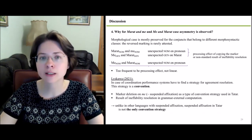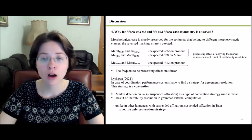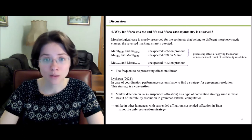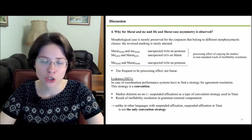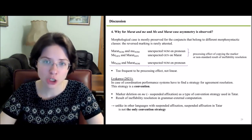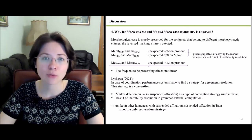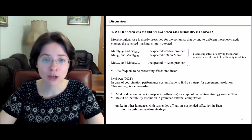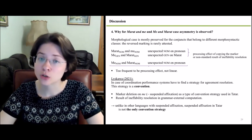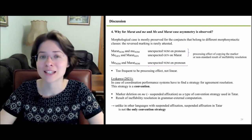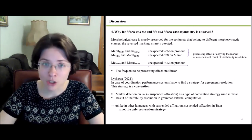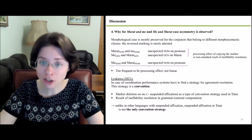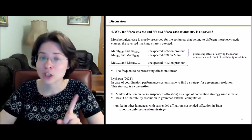When reversed marking is attested, this might be the result of processing effects or non-standard ineffability resolution. The frequency of these patterns may be too high to be just processing, so we think the unexpected strategies we observe are actually conventions in the sense of Luskova 2021. The marker deletion on 'me' — which looks like suspended affixation — should be considered a type of convention strategy used in Tatar as a means for ineffability resolution in grammar-external computation. What makes Tatar different from other languages with suspended affixation is that suspended affixation is not the only convention strategy available in Tatar.